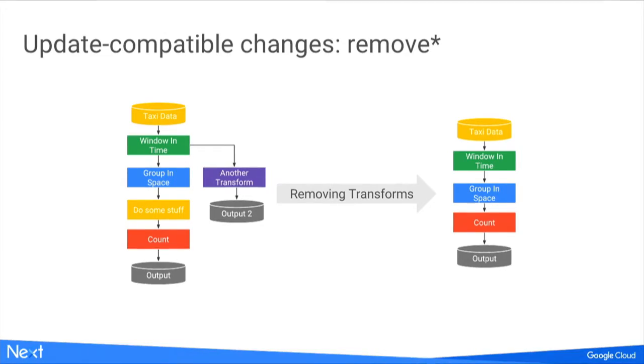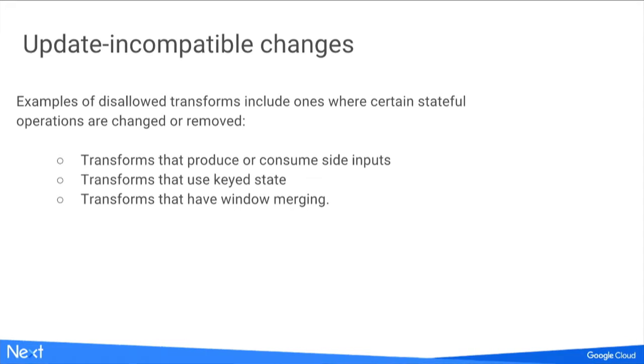Examples of update-compatible changes include adding another transform with a new output path, rearranging steps in your pipeline for better performance, and removing steps. However, there is a class of updates that are unsafe — usually involving transforms producing or consuming side inputs, using keyed state, or involving window merging. If you request such a change, the Dataflow service will reject the update but will not alter the flow of your original pipeline.